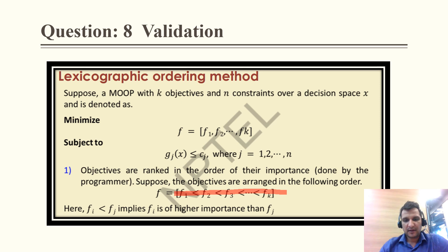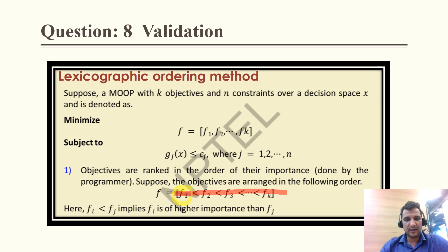In lexicographic ordering, f1 has the highest priority. It doesn't mean fk has higher priority — rather, as per the lexicographic ordering method, we go to f1 first as it has the highest priority, and the order is decreasing. So f_i has higher importance than f_j when i < j. Therefore, in lexicographic ordering the objectives are always arranged in decreasing order of priority.